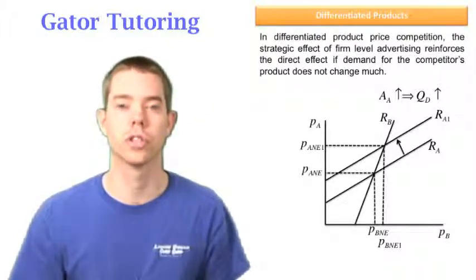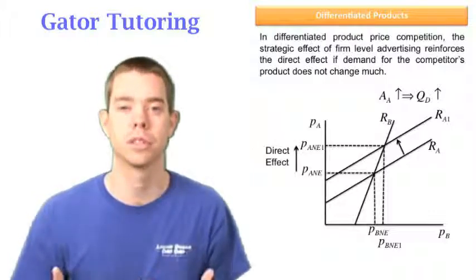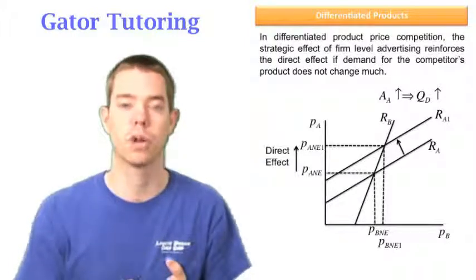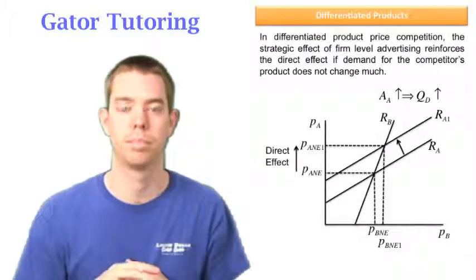Now let's take a look at the direct and strategic effects. The direct effect is good for us because our demand increased, which means we're making more profit. Don't worry too much about which way the price went, because sometimes when a marginal cost reduction happens, our price goes down and that's also good for our firm. Just think about it in plain terms.